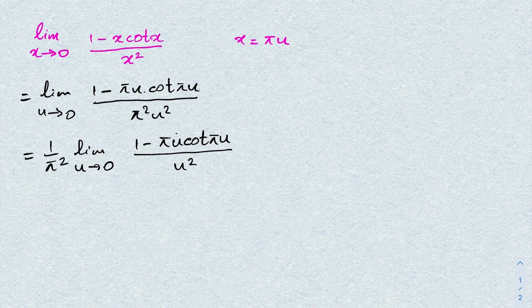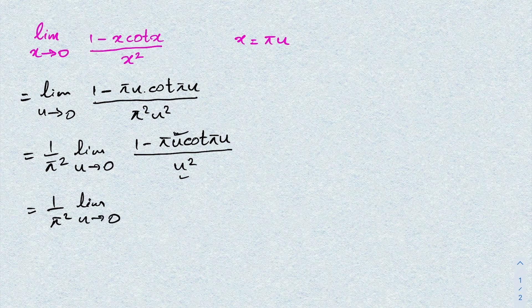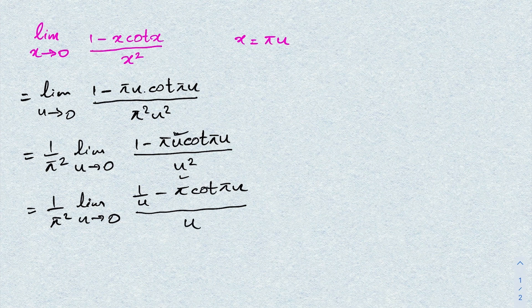We have u in the numerator and u² in the denominator, so I am going to divide both numerator and denominator by u. This gives (1/π²) times the limit as u approaches 0 of (1/u minus π·cotangent(π·u)) over u.